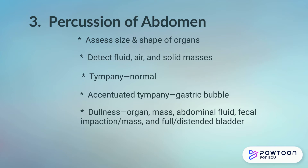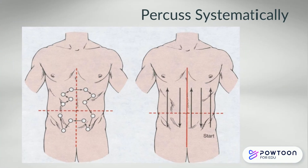You may hear accentuated tympani at the gastric bubble. When percussing the abdomen, it's important to use a systematic method. These methods will cover all four quadrants of the abdomen and address all organs and the gastric bubble. Either one of these methods would be sufficient for your exam.